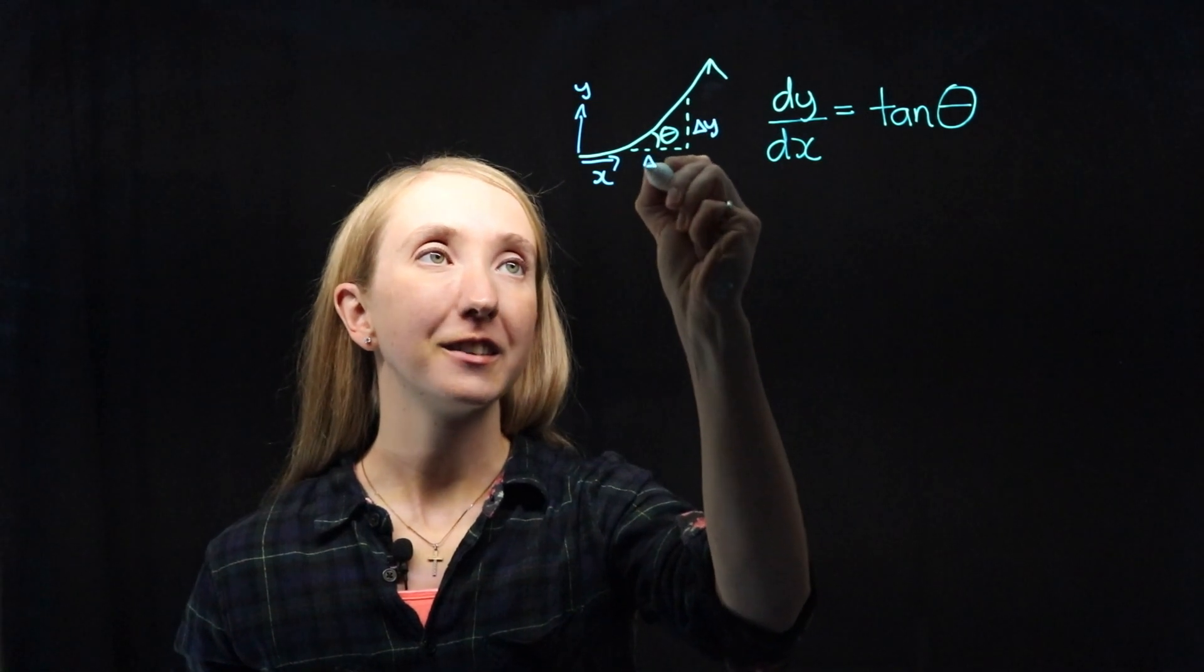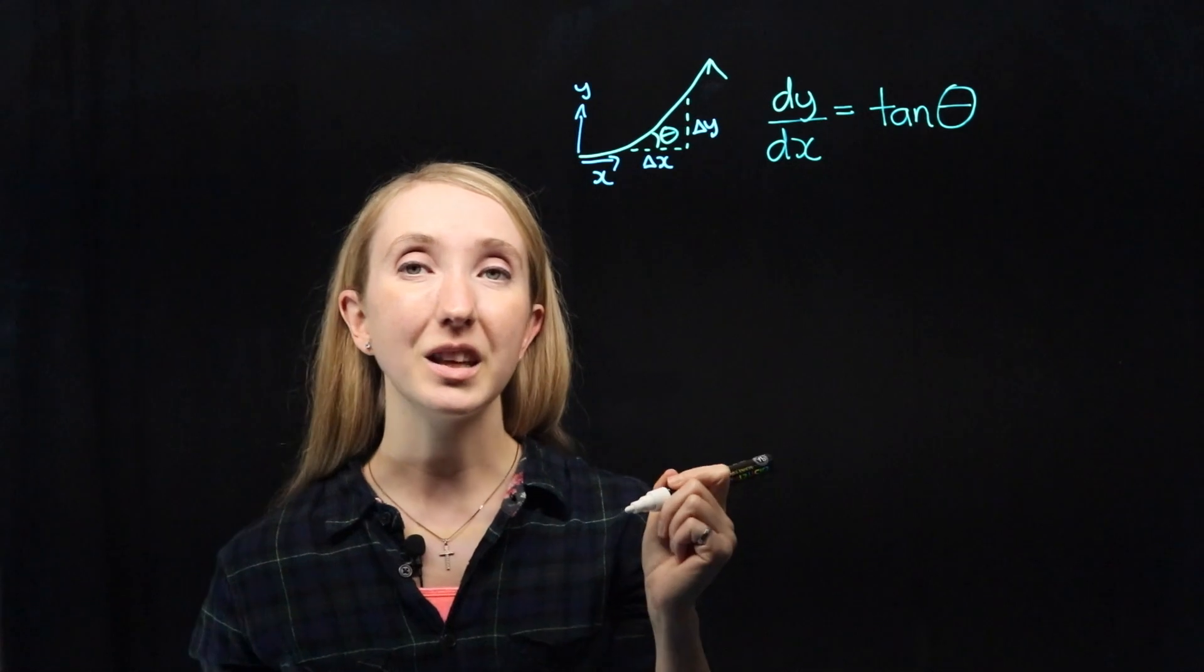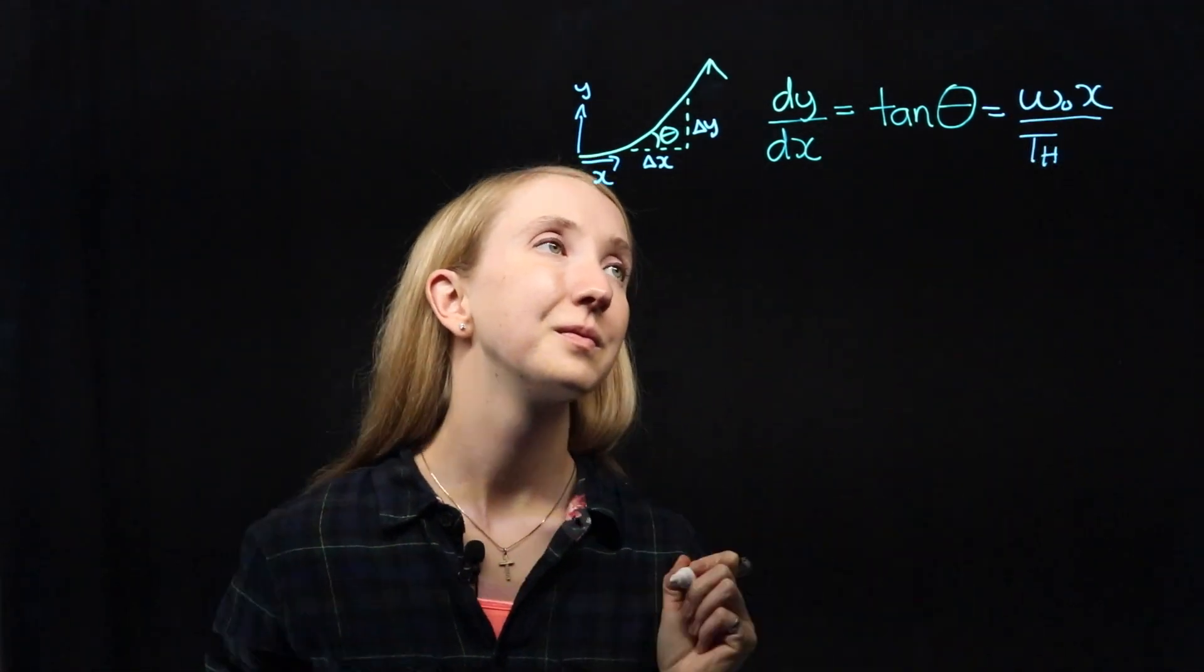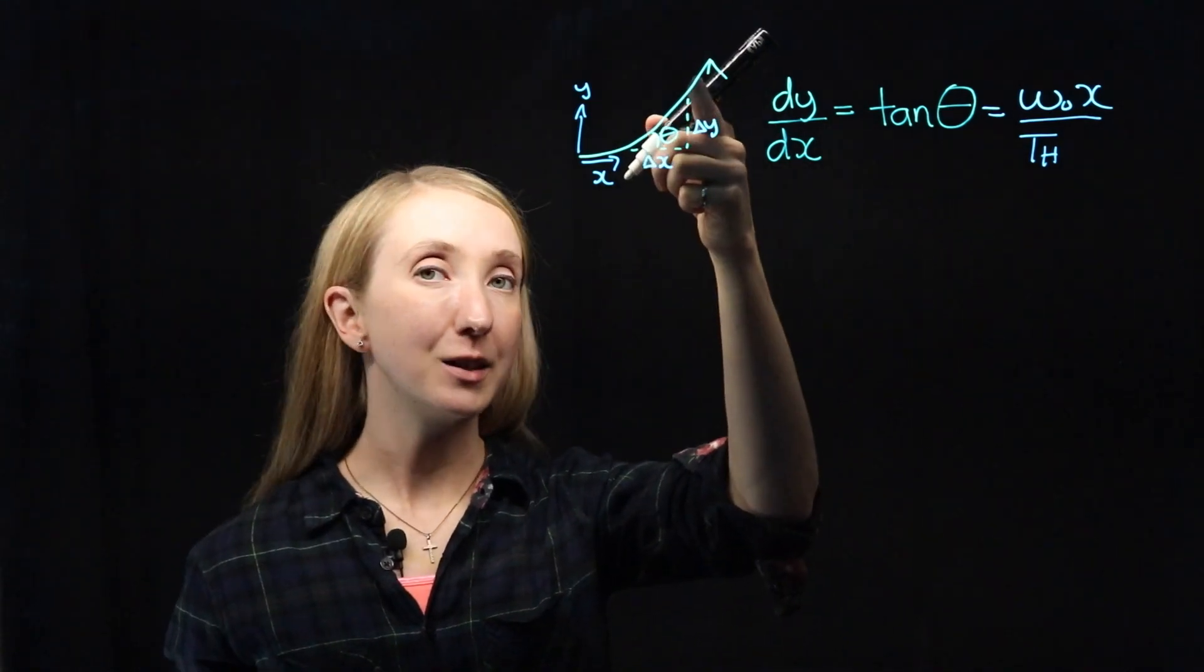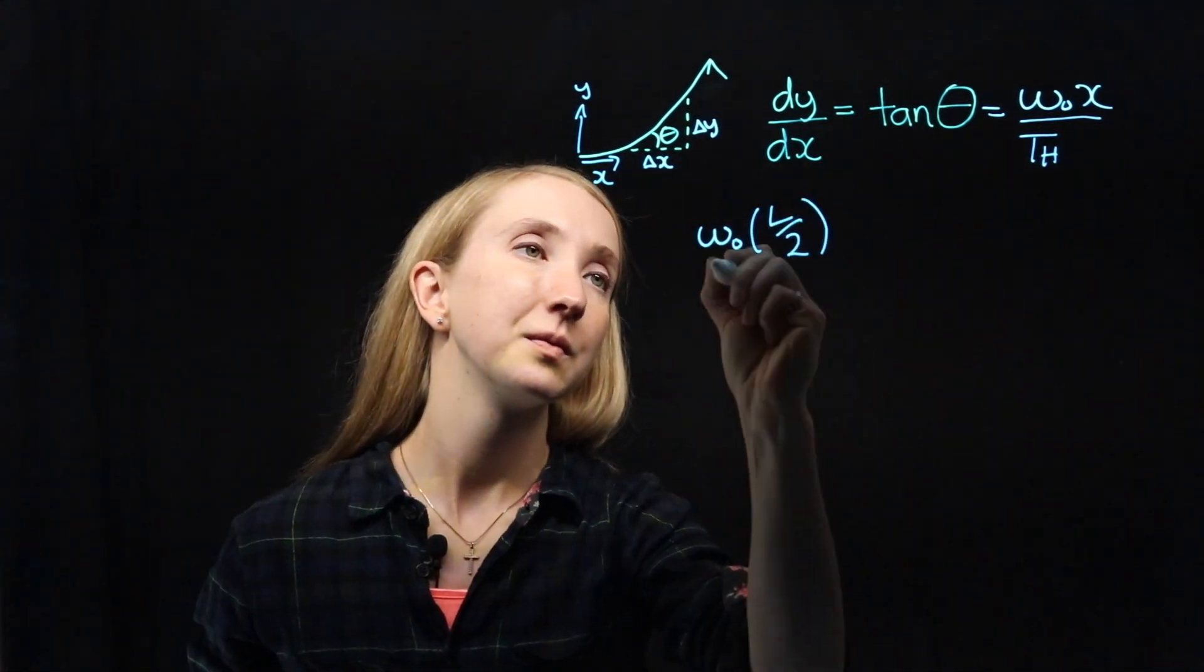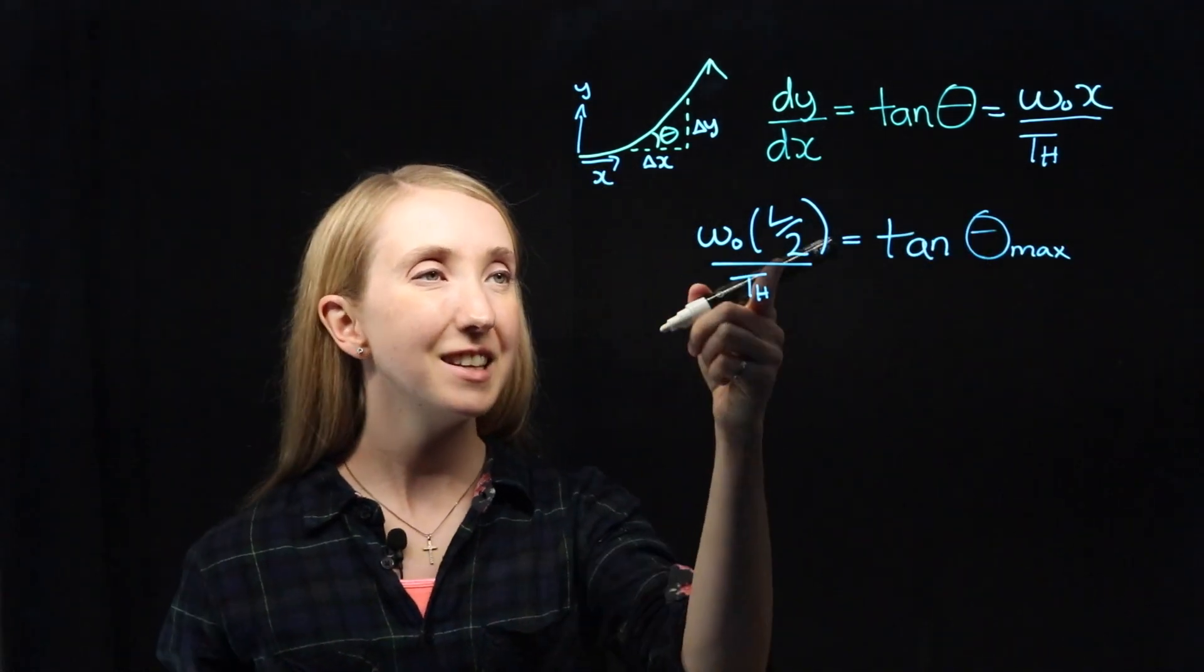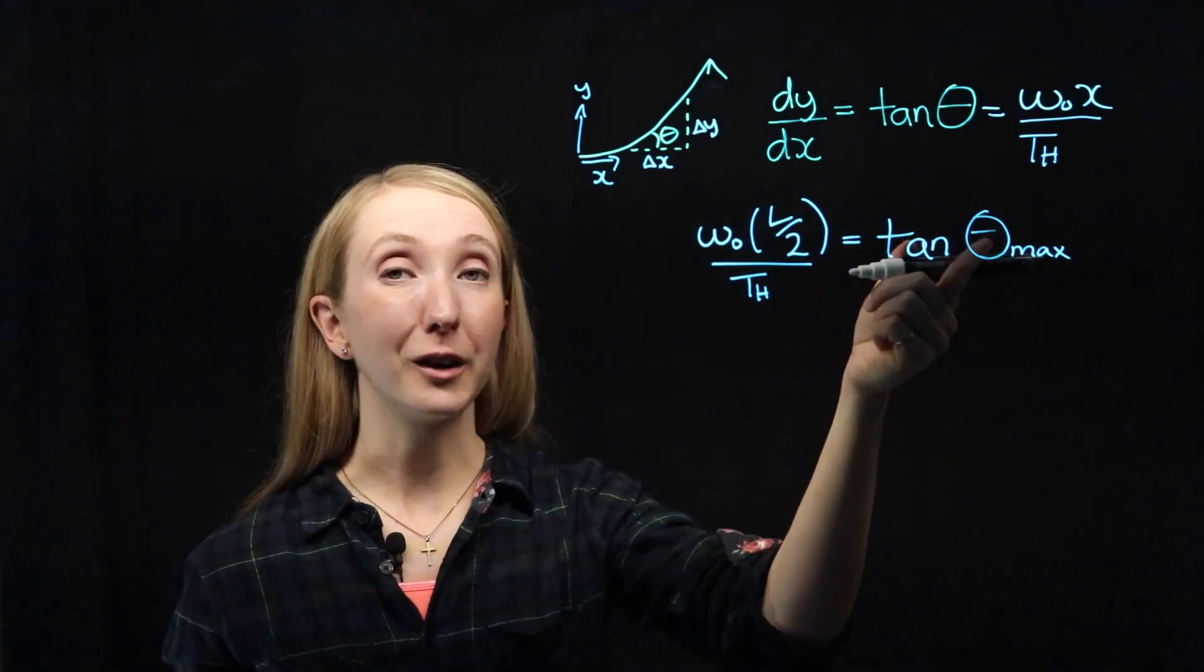Thankfully, the slope is something we already found today. And we know it's a maximum near the end by our support, where our x value is equal to L over 2. And since these are all knowns, we can rearrange to solve for our theta.